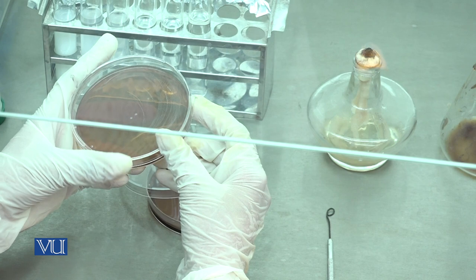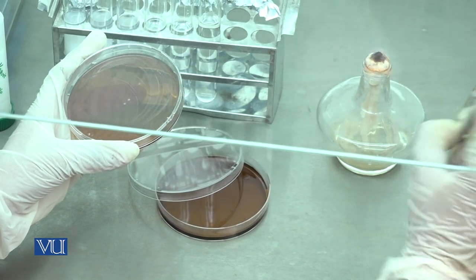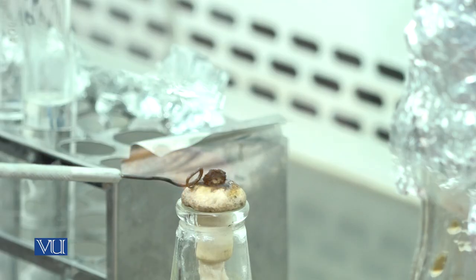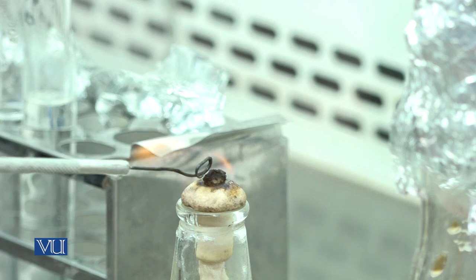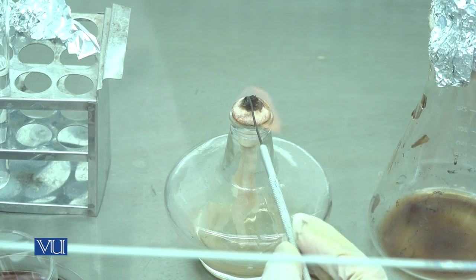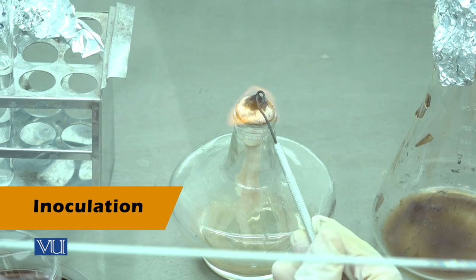This is already prepared plate. Now we take 10 raised to minus 6 dilution. For inoculation we use streak plate method.